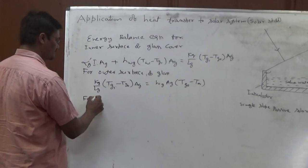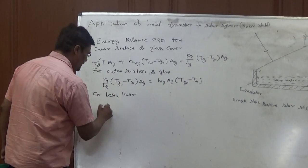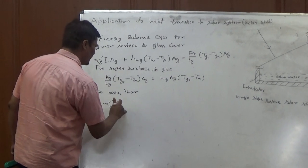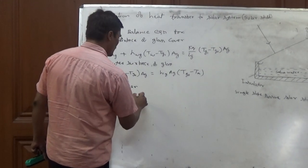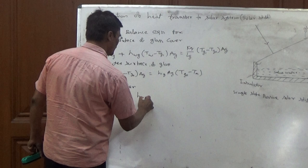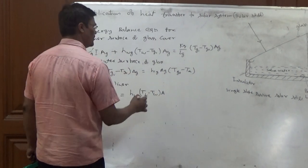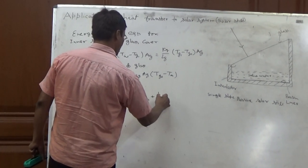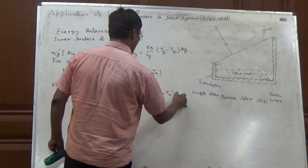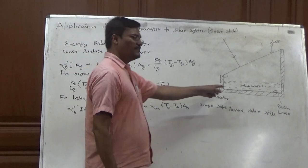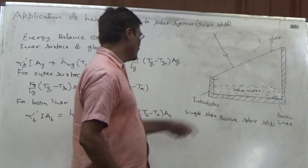Another equation for basin liner. For basin liner, alpha B dash is the effective absorptivity. I into AB. This is the heat gain. And heat will be lost to the water. So HBW, TB minus TW into AB plus HBA, TB minus TA into AB. HBA is the equivalent heat transfer from basin liner to ambient. And HBW is the heat transfer from basin liner to water.